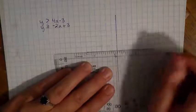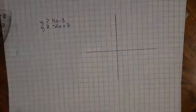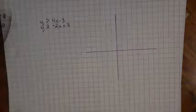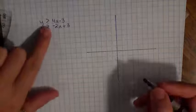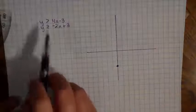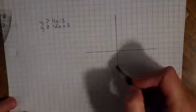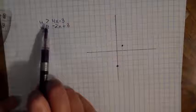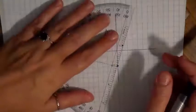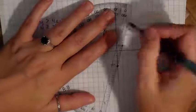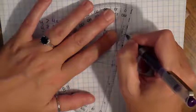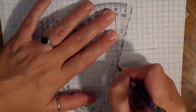I'm going to grab a pencil because I find that using a pencil for the shading is much more effective. I want to graph my first line, y equals 4x minus 3. I'll start with negative 3, and my slope is 4, so I'm going to go up 4 and over 1. This is a greater than, so I'm going to have a dashed line, not a solid line because we don't have the equal to portion.